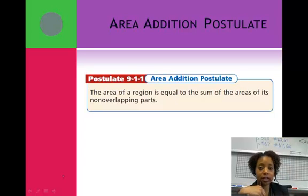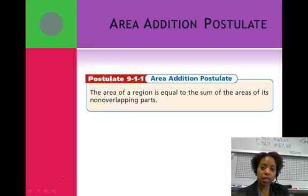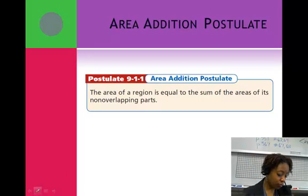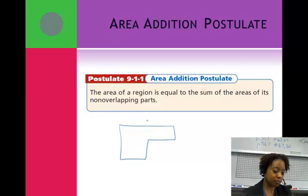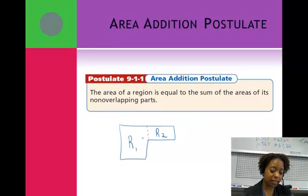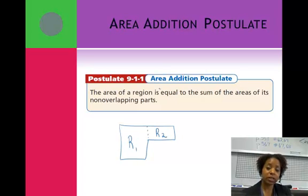First, we're going to look at a concept called the Area Addition Postulate, which says that if you have a figure of an interesting shape — one you don't know the area of — if you can find the area of the non-overlapping parts and add those together, that would be the area of the entire region. For example, if you had an irregular figure and dropped it down to make a rectangle 1 and rectangle 2, the areas of those two rectangles added together give you the total area. That's how we'll develop formulas for our special quadrilaterals.